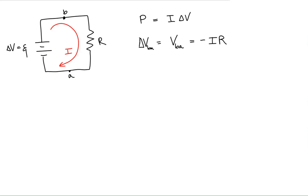Let's put this expression into our expression for power. So power is equal to the current times the potential difference. And notice for a resistor,